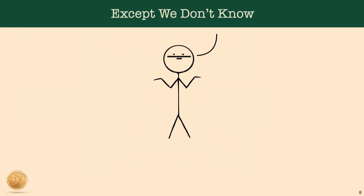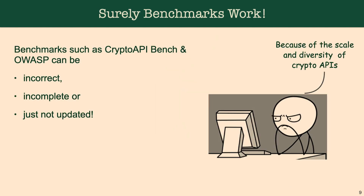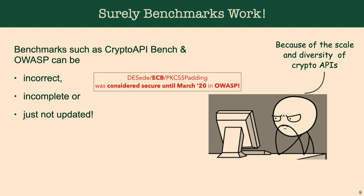But that's not the case though. We don't really know what's going on if we only rely on benchmarks. Sometimes these benchmarks can simply be incomplete or incorrect. For example, the OWASP benchmark included DES/ECB as a secure protocol until March 2020, when it was reported by an independent developer and was considered secure until that point.